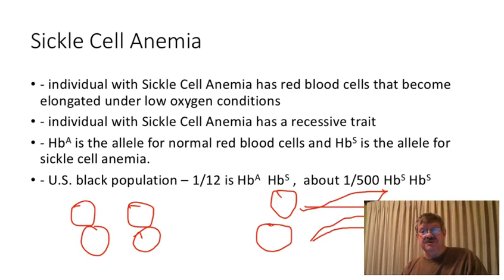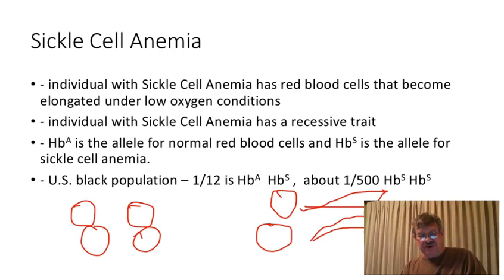These elongated cells tend to hang up in the capillaries, causing blockages there. They also tend to hang up in larger vessels, causing blood clots throughout the body. This cuts off the supply of oxygen to tissues throughout the body, leading to damage in a wide variety of tissues. A person with sickle cell ends up with a list of medical problems just as long as your arm.